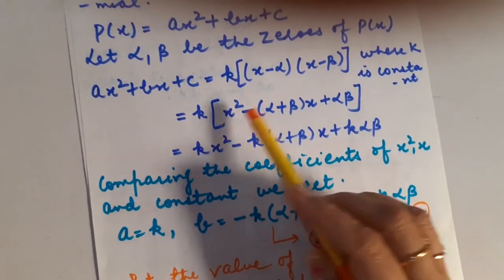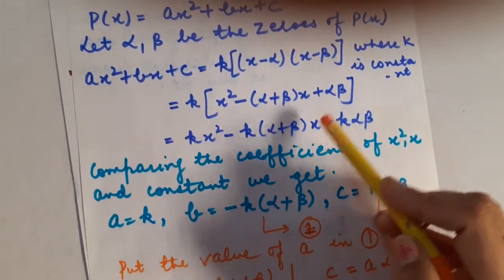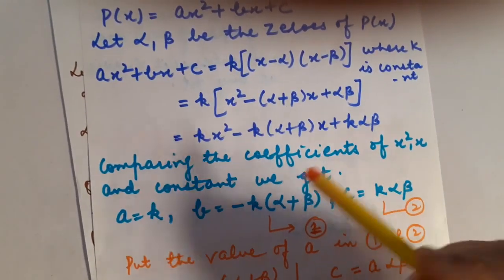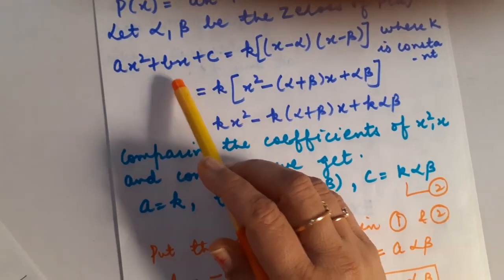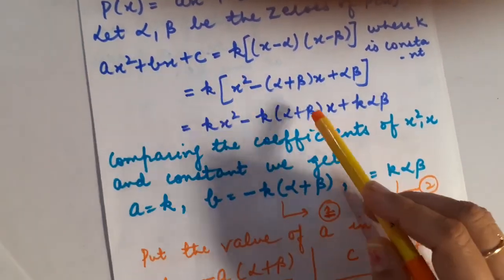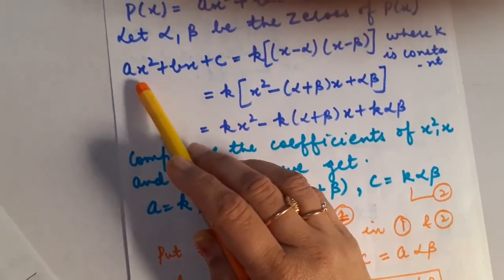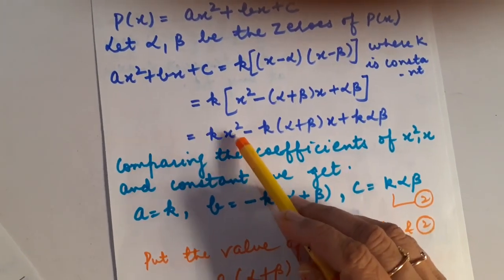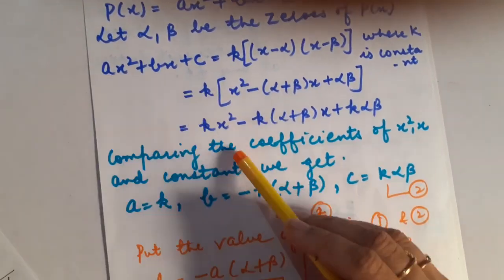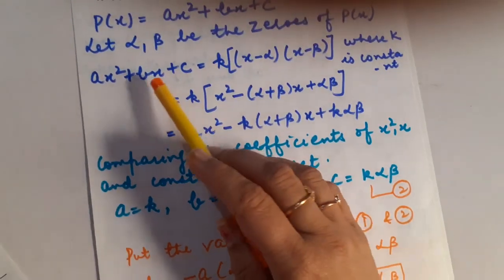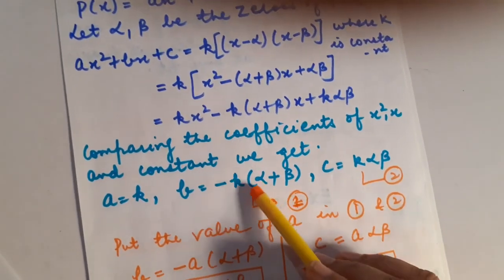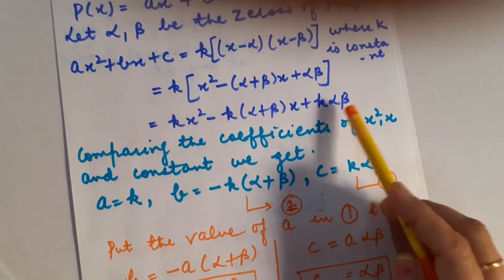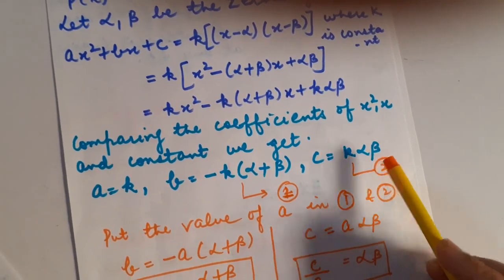Now, multiplying k with each and every term gives: kx² − k(alpha + beta)x + k·alpha·beta. Comparing the coefficients with Ax² + Bx + C: A equals k, B equals minus k times (alpha + beta), and C equals k times alpha·beta.